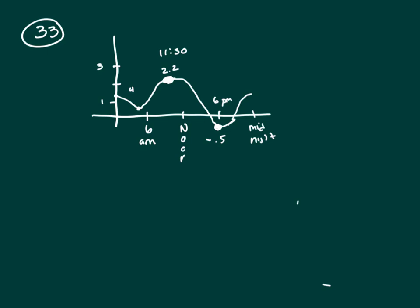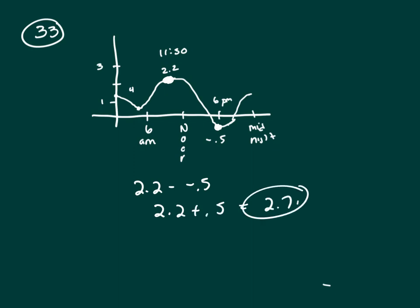To find the difference, that means subtraction. We want to do 2.2 minus a negative 0.5, so that's 2.2 plus 0.5, which is 2.7, and that's E.